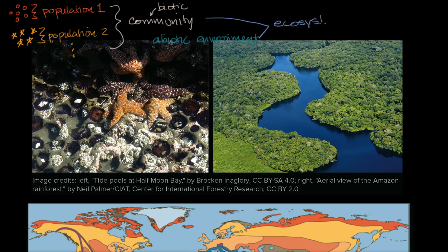Your ecosystem could be a very small region or a very large region, but it's made up of all the living things — the biotic factors — and the non-living things — the abiotic factors. What we're going to think about in this video is the types of ecosystems that you might have, and begin to think about how the different factors interact with each other.